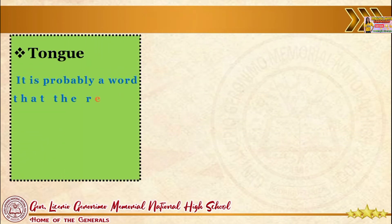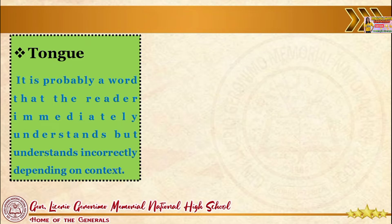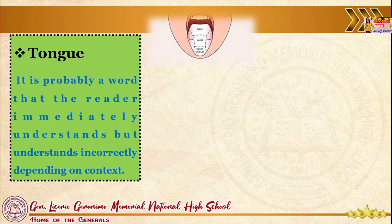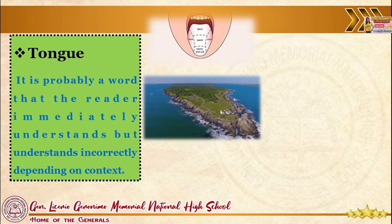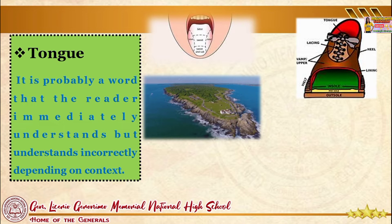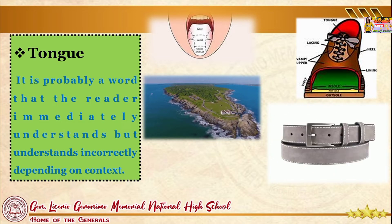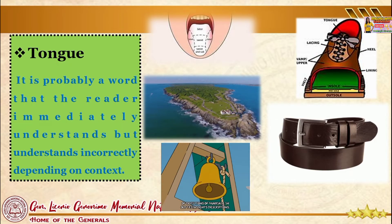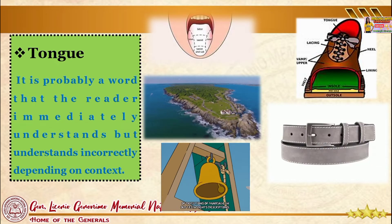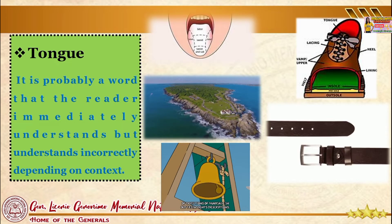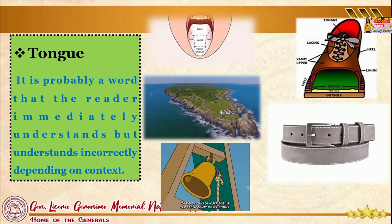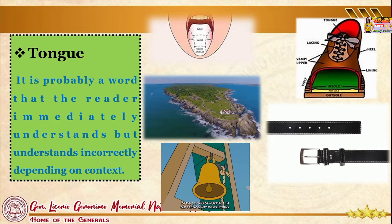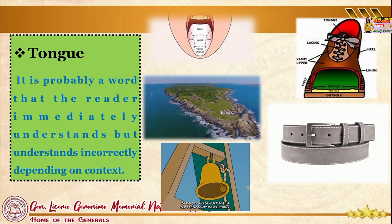Let us use 'tongue' as an example. Tongue is probably a word the reader immediately understands but may understand incorrectly depending on context. Defined conceptually, a tongue can be a structure in a mouth, a strip of land, part of a shoe, a language, part of a belt buckle, part of a bell, or anything shaped like the tongue. This is a commonly used word used in uncommon ways — an example of a problem that may be avoided if the technical writer defines terms that are likely to be misunderstood or not understood.